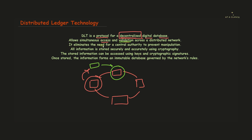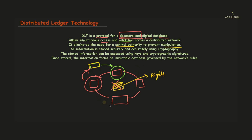DLT also eliminates the need for a central authority to prevent manipulation. In a system with a central authority, that authority would have higher rights compared to other nodes, giving it the ability to manipulate information inside the network. Since DLT operates without a central authority, no single entity can manipulate any piece of information inside the entire network.